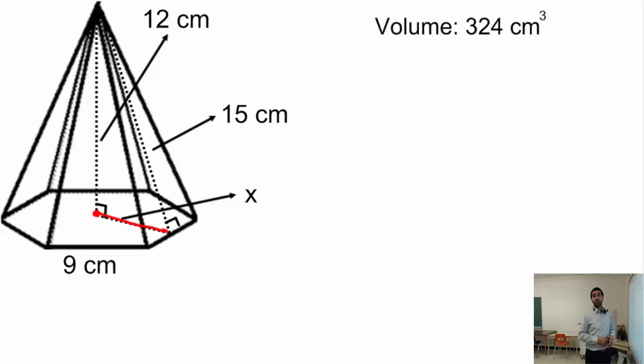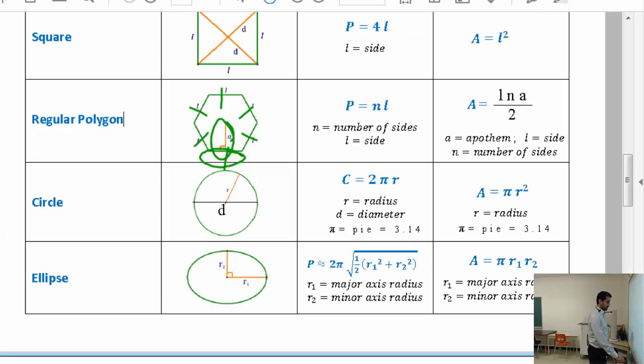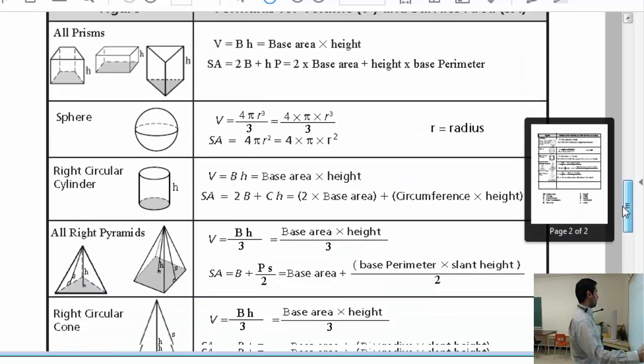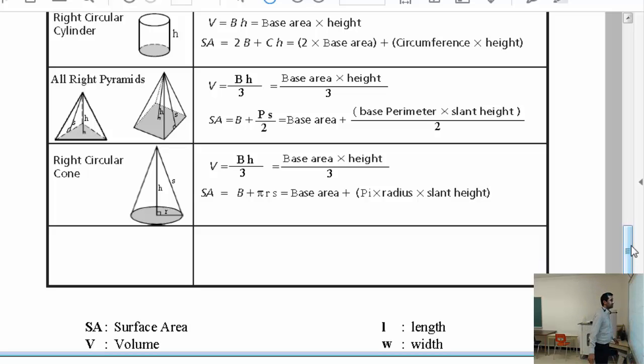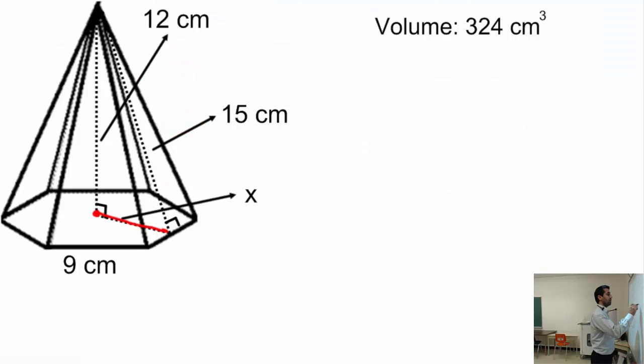What is the volume formula for the prism? I'm sorry, for the pyramid. All right, pyramid. Right here, the volume formula is capital B times h divided by 3. Volume equals base area times height divided by 3.